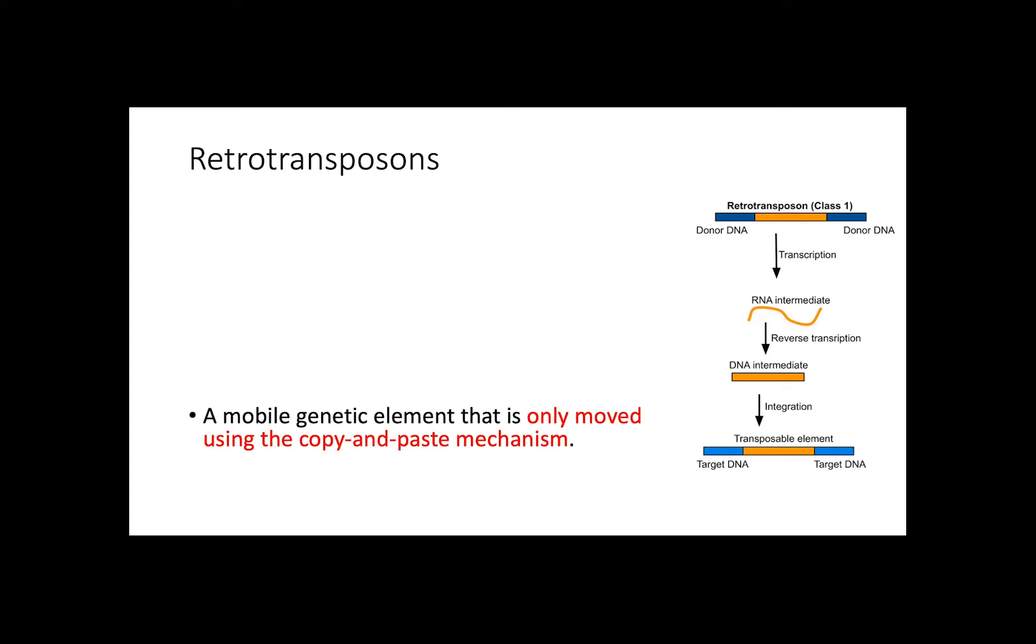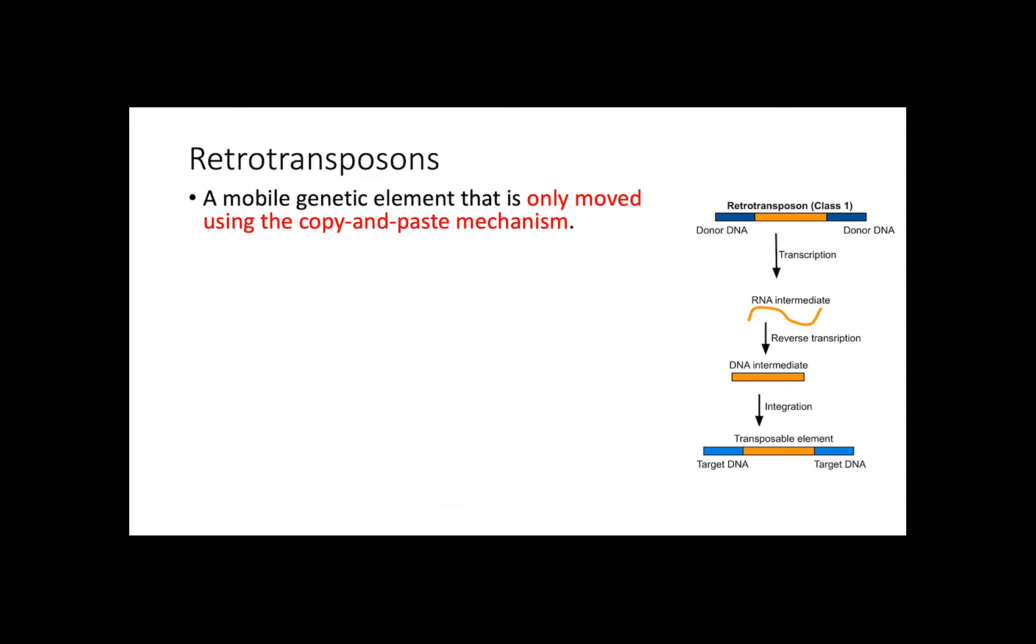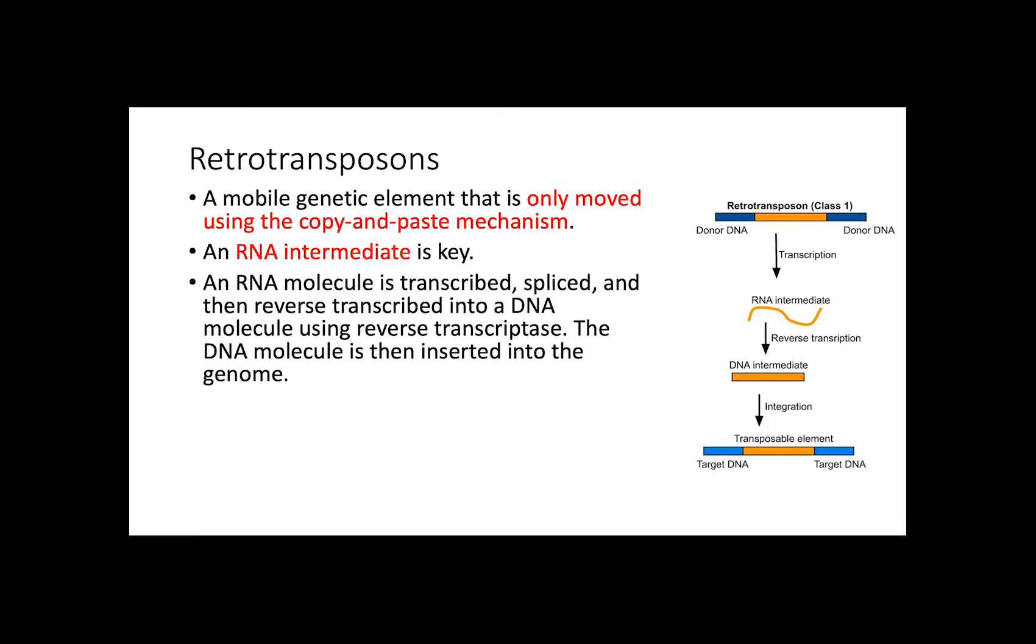Retrotransposons are mobile genetic elements that are only moved using the copy and paste mechanism. Here, an RNA intermediate is key. An RNA molecule is transcribed, spliced, and then reverse transcribed into a DNA molecule using reverse transcriptase. The DNA molecule is then inserted into the genome.